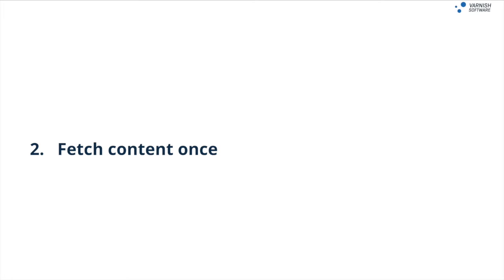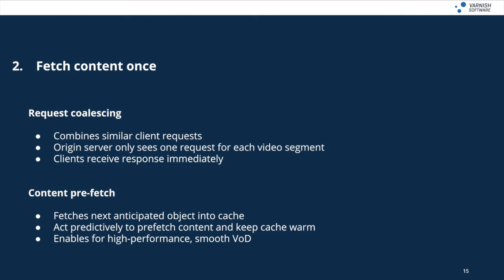The best way to relieve pressure on origin servers is by not visiting them for content unless you absolutely have to — fetch content once and keep it in the cache. Features in Varnish Enterprise for doing this include request coalescing, which combines multiple requests for the same piece of content, such as a video segment, and only visits origin servers once with a combined request, protecting origin servers while speeding up response times for users. Varnish also includes content prefetch, which acts predictively to preload the next anticipated object into the cache — in video on demand situations, this loads the next video segment so it's already there when the user needs it, significantly lowering latency and protecting infrastructure from high demand regardless of audience size.